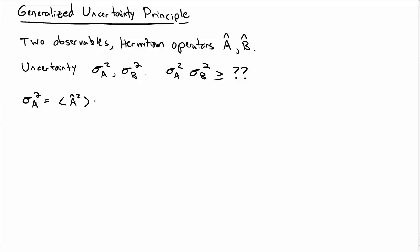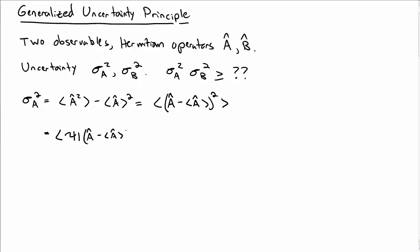Let's write out sigma-A squared in a bit more detail. Sigma-A squared can be written as the expectation value of A minus the expectation value of A, all squared. The expectation value means we have this sandwiched with some state psi. We write the square out as two factors of the operator A minus its expectation value.